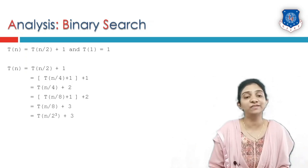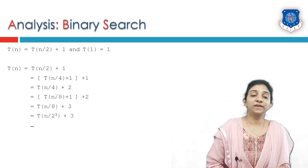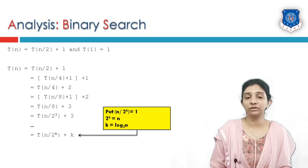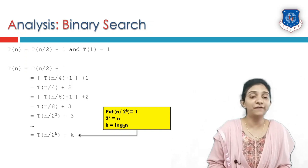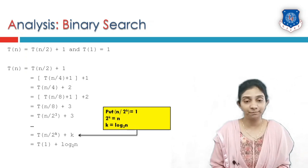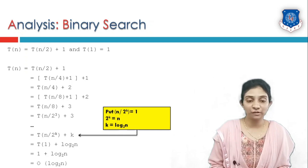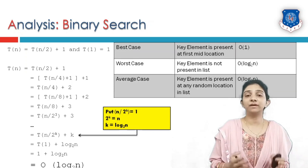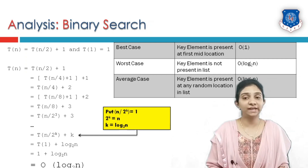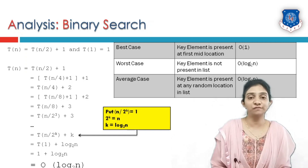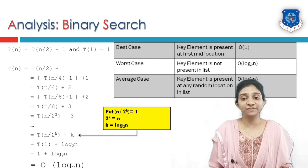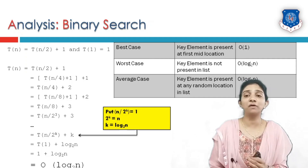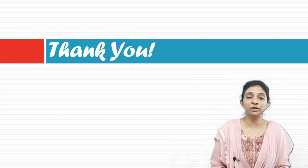The generalized form is T(n/2^k) + k. Setting n/2^k = 1, we get 2^k = n, so k = log₂(n). Substituting, the expression becomes T(1) + log₂(n) = 1 + log₂(n). Therefore, the complexity of binary search is O(log₂ n). In the best case, if the element is at the mid location on the first comparison, the complexity is O(1). In the worst and average case — whether the element is present, not present, or randomly located — the complexity is O(log₂ n). Thank you everyone for watching. This is Munira Topia signing out.